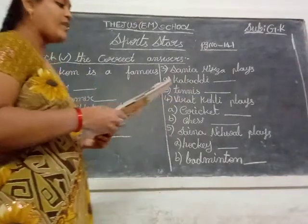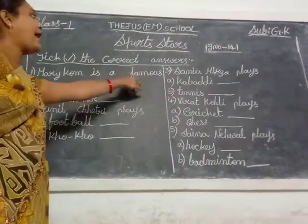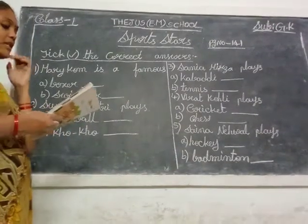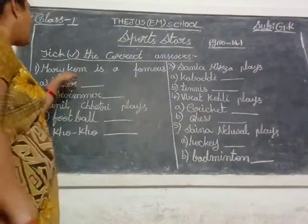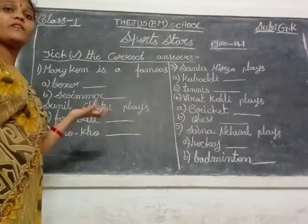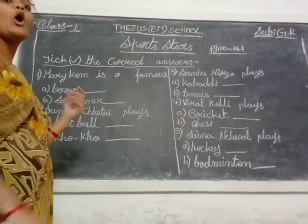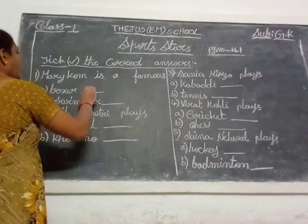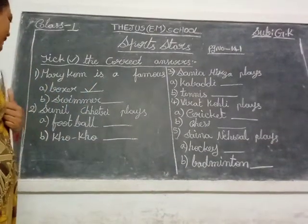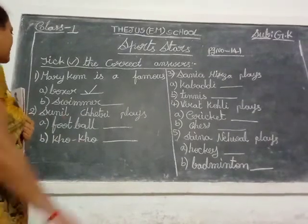Now 1st one — C, children. Mary Kom is a famous — which sport is this person famous for, children? Boxer. So you select the A option: boxer.